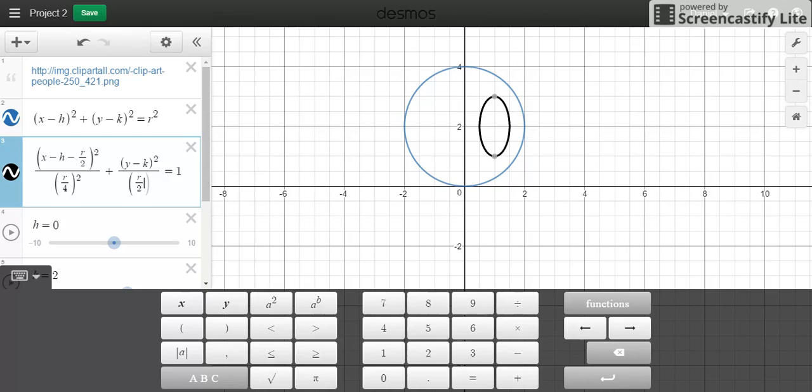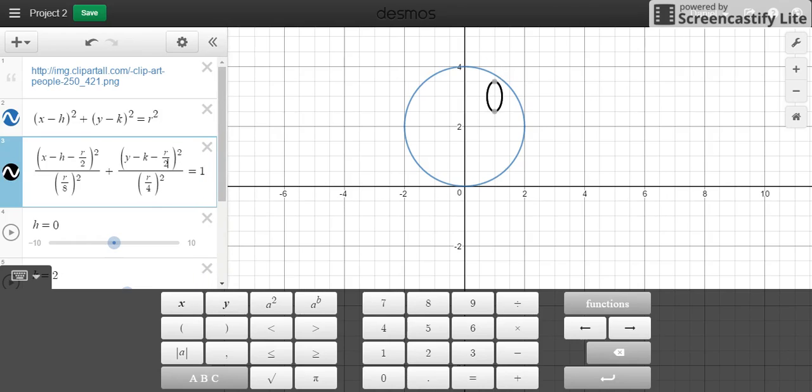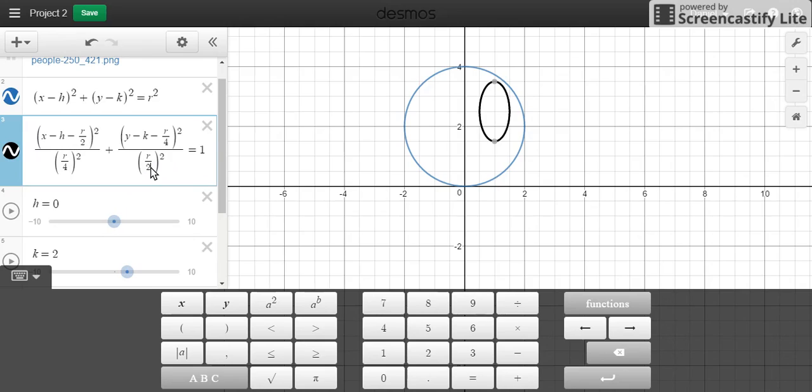As for this end right here, I'm going to go r over 2 squared. I'm going to start making adjustments to make it look how I wanted to look. I'm going to move this up. 2 might not be the best option. 3 looks good. So I might shift this over. I'm going to leave it here.